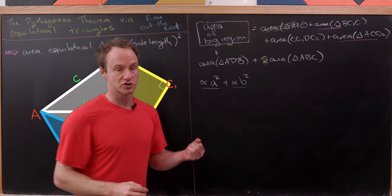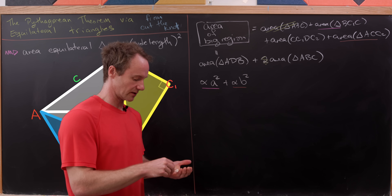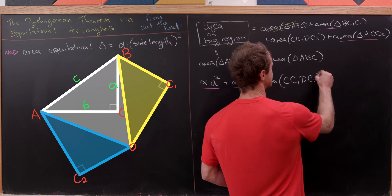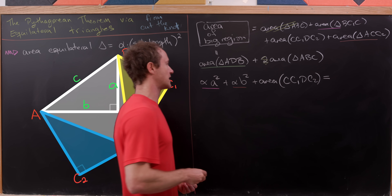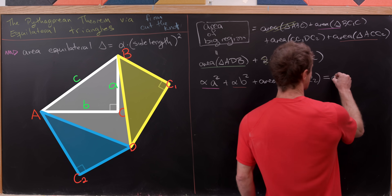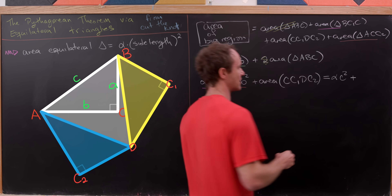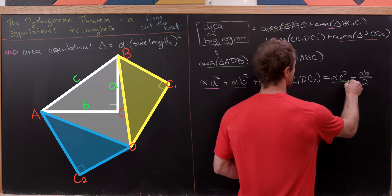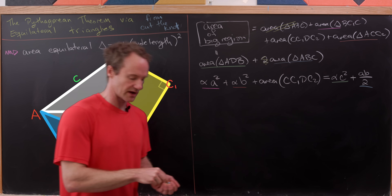The area of triangle ACC2 is alpha times b squared, since it's an equilateral triangle with side length b. Adding the area of parallelogram CC1DC2 gives the left side. The right side equals the area of the large equilateral triangle ADB — which has side length c, so alpha times c squared — plus the area of our original triangle, which is ab over two.